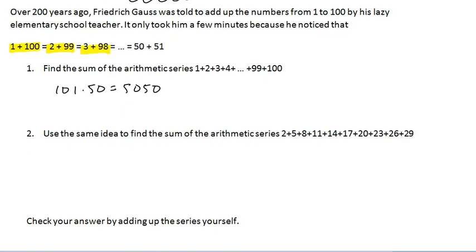Okay, so let's have a look at this guy here, number 2. So let's see, 2 plus 29 is going to be 31, 5 plus 26 is going to be 31. So that's 2 of those, 3 of those, 4 of those, 5 of those. So we're going to end up with 31 times 5, is going to give us 155.